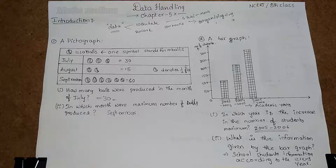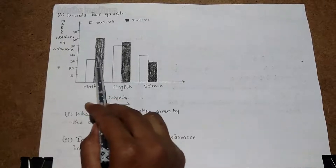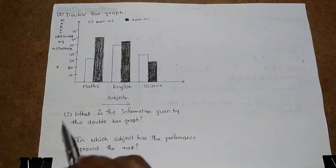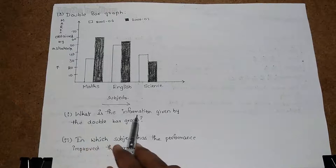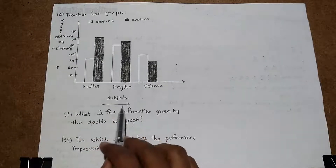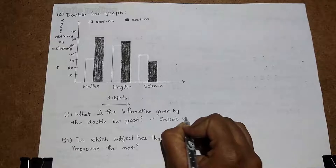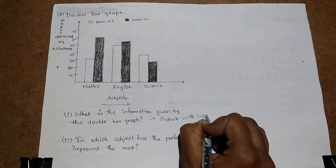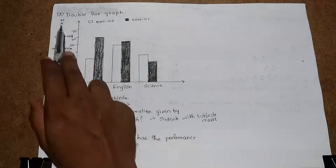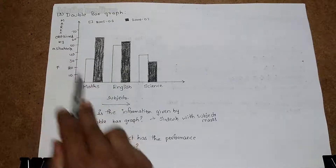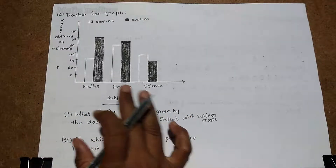Next, let's look at the double bar graph. A double bar graph shows two sets of data simultaneously and is useful for comparison. Here the x-axis shows subjects and the y-axis shows marks obtained by students. The information given by this double bar graph is the marks of students in every subject across two academic years.